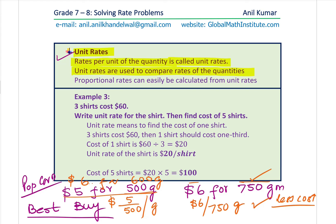You can compare this using unit rate. Example: Three shirts cost $60. Write the unit rate for one shirt, then find the cost of 5 shirts. Unit rate means to find the cost of one shirt. Three shirts cost $60, so one shirt should cost one third — 60 divided by 3 — which is $20.